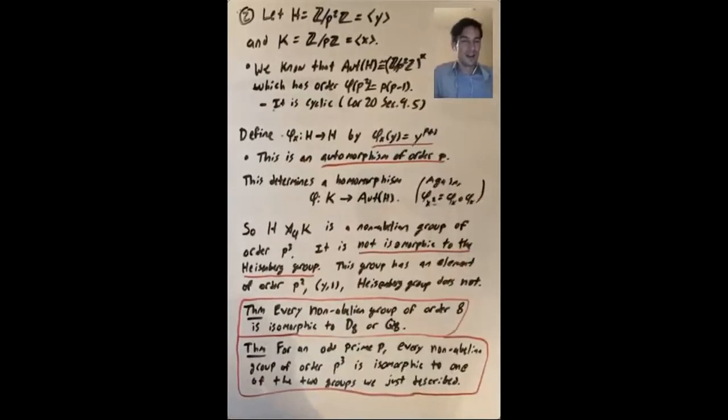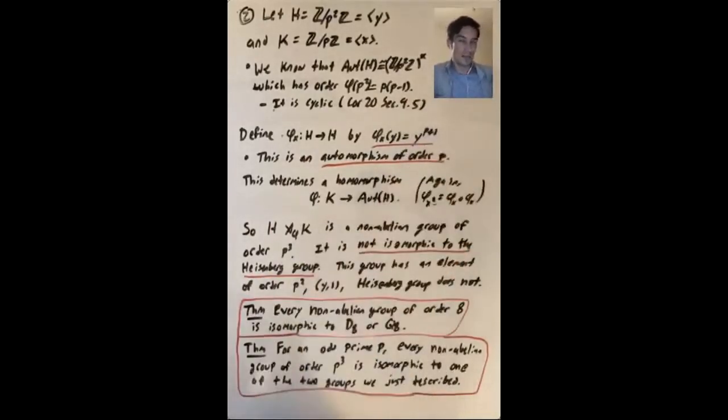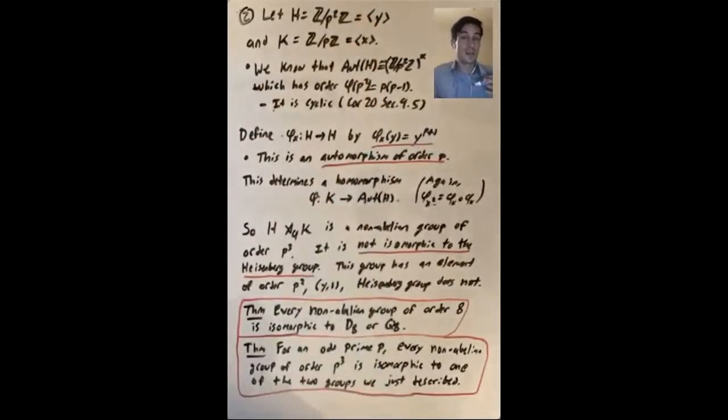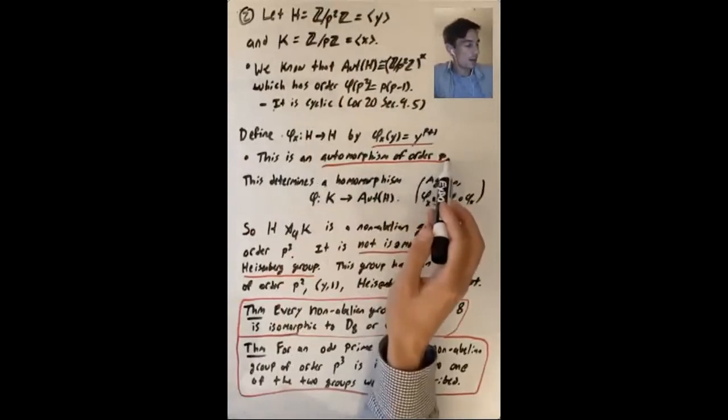So let me point out, this is potentially a little bit confusing. This example comes from Dummit and Foote. If it were me, I would want to write this additively rather than with the y to the p plus one notation, because these are both additive groups. But since this is the way that it's presented in Dummit and Foote, I don't want to switch the notation.